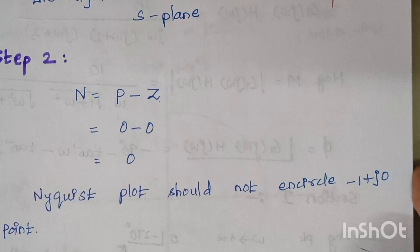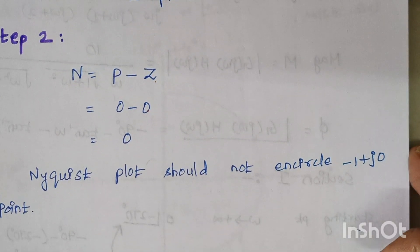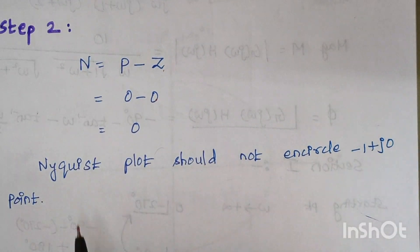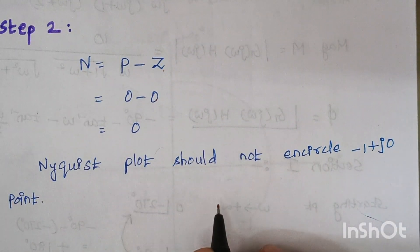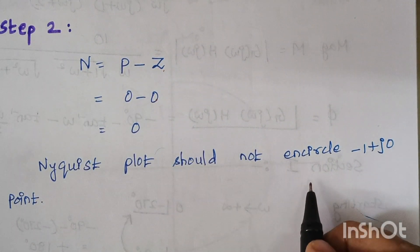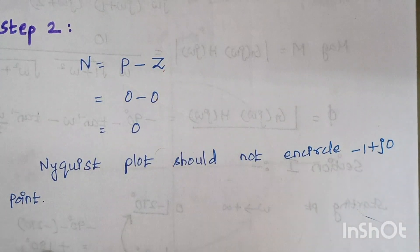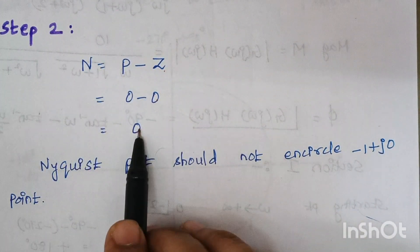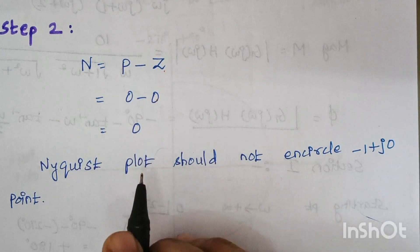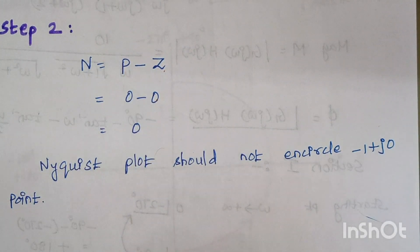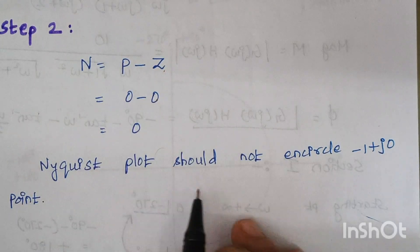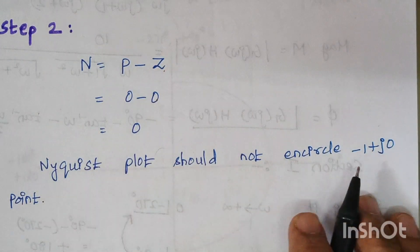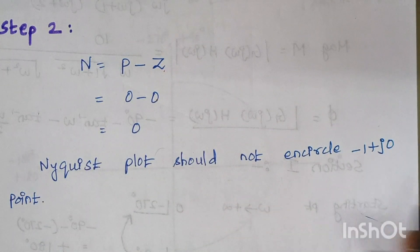Since the number of encirclements N is zero, we are concluding that the Nyquist plot should not encircle the minus one point. While solving the problem further, we should find that the Nyquist plot does not encircle minus one.